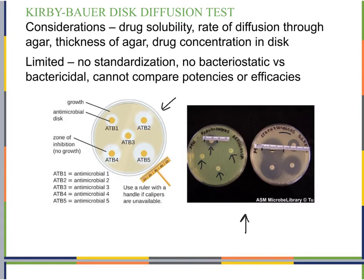Some considerations for this test include drug solubility — larger antimicrobial chemicals may not diffuse as easily — which is why standards exist. Also important are the rate of diffusion through the agar, the thickness of the agar in the plate, and the drug concentration in the disc. Discs are typically purchased at a certain concentration, but uniformity must be considered. There is a lot of room for error: some discs may be pressed down more than others, or the agar may be thicker in certain areas. But again, it's a good starting point.